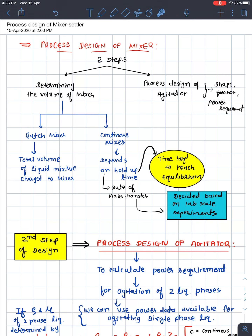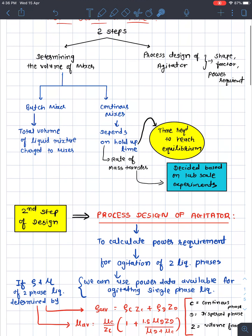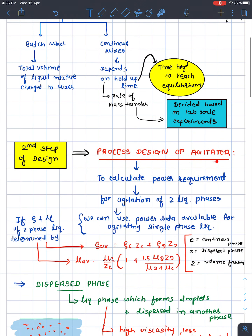The second step is the process design of the agitator, since agitation is required before mixing can occur. The final outcome of agitator design is the power calculation. For agitation of two liquid phases — the feed and the solvent — we can use the power data available for agitating a single-phase liquid if we account for average density and viscosity.